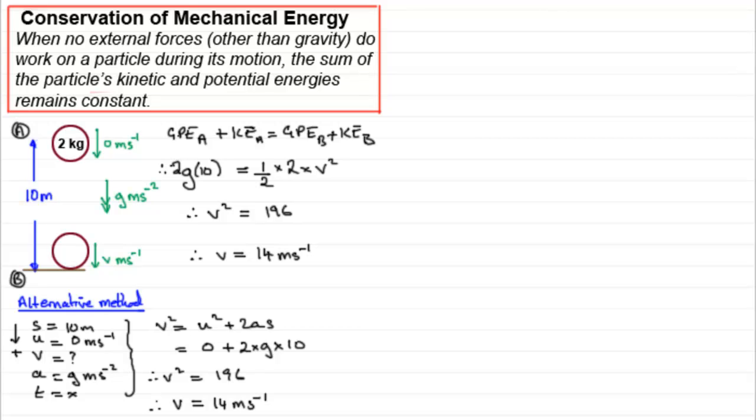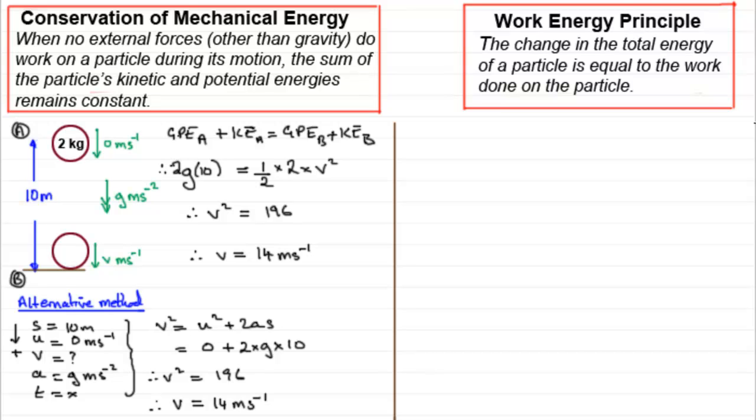Now we could do this problem another way. It's by something called the work energy principle. It's this principle here. That the change in the total energy of a particle is equal to the work done on the particle. Now if I use this principle for this question here, what we do is we look at the gain in kinetic energy first of all. So we'll just put this down here, have gain in KE.